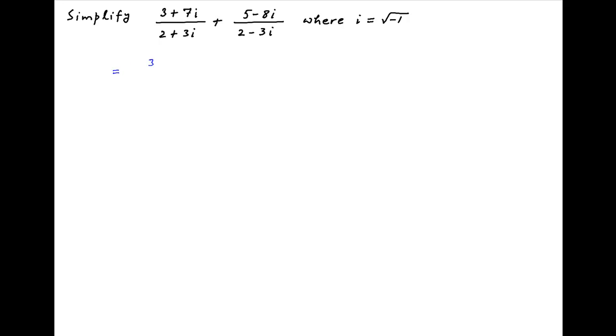The first term in the given expression is 3 plus 7i divided by 2 plus 3i. Multiply and divide this with the conjugate of the denominator, which is 2 minus 3i.